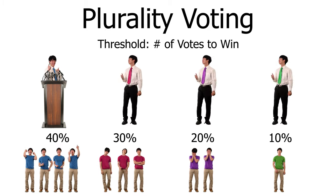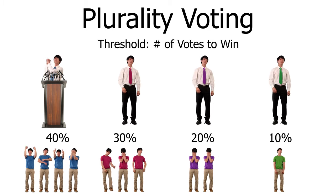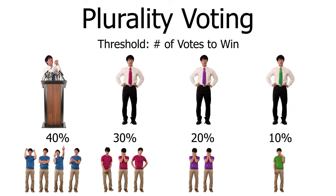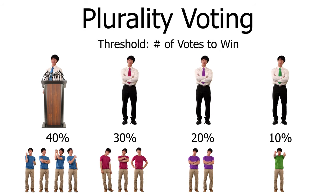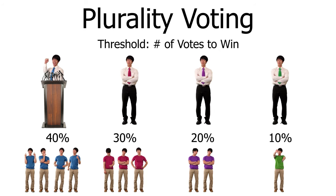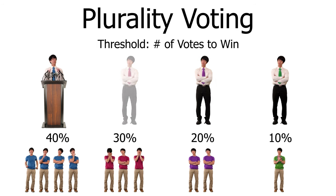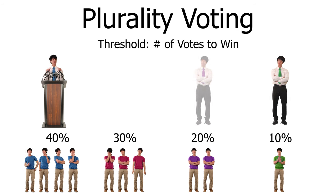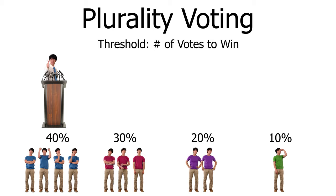This is obviously harder on smaller parties. What this means for winner-takes-all districts is that a party within that district has either the most support or no representation in government at all. There's no middle ground.